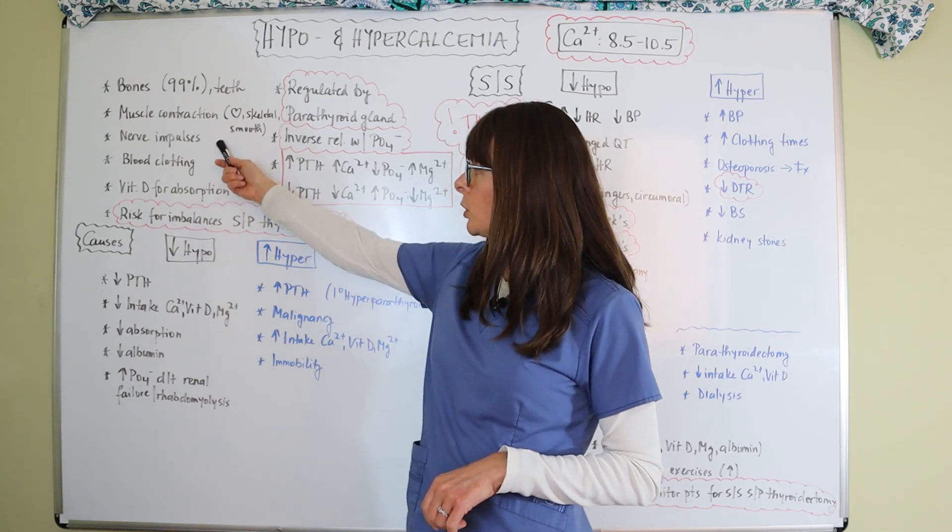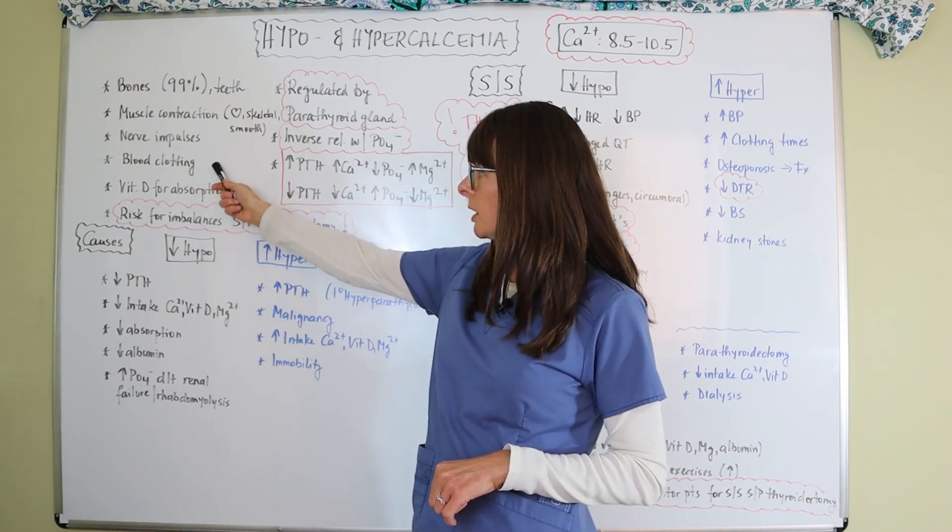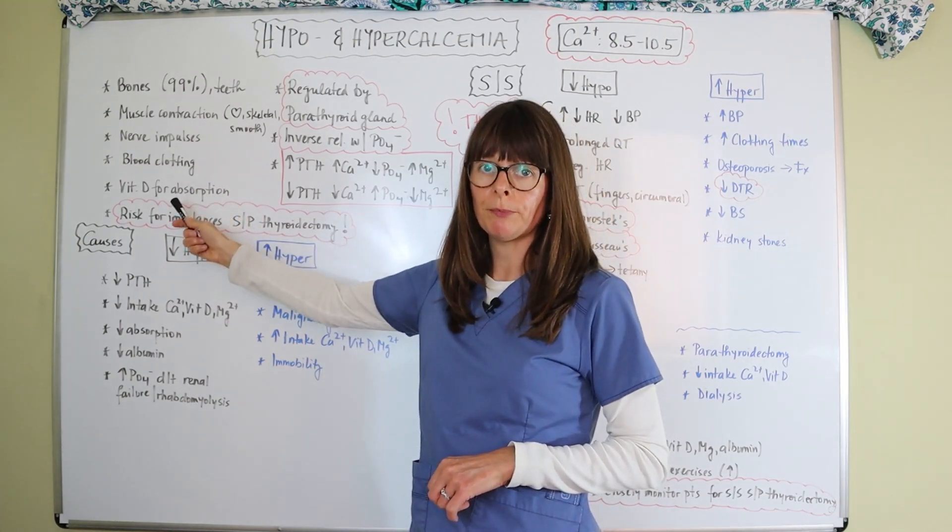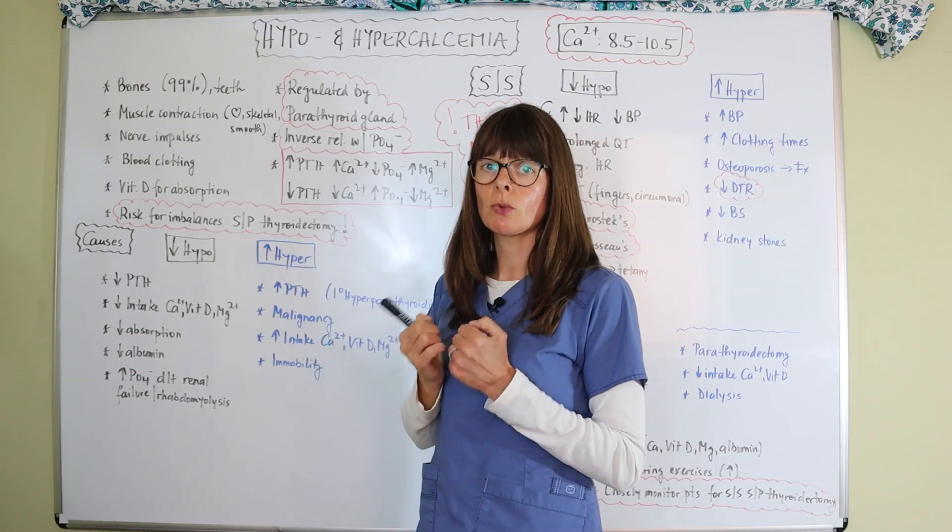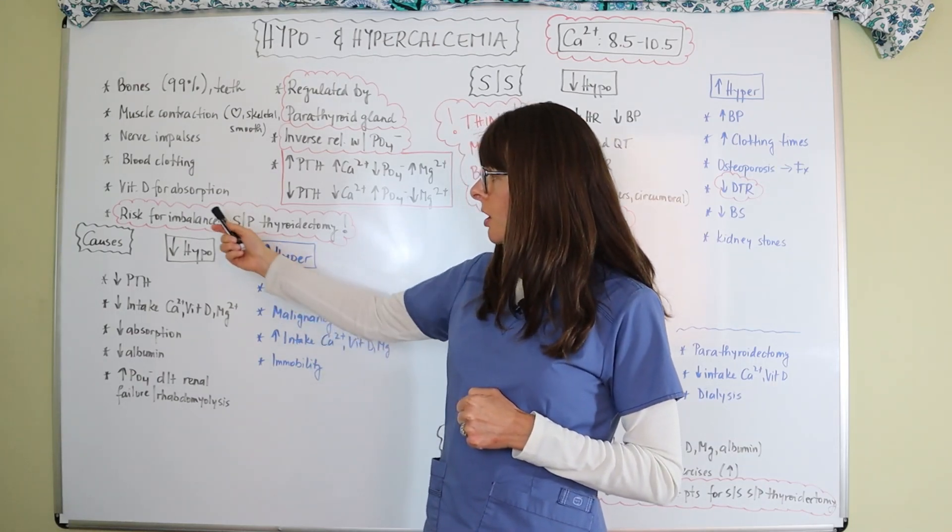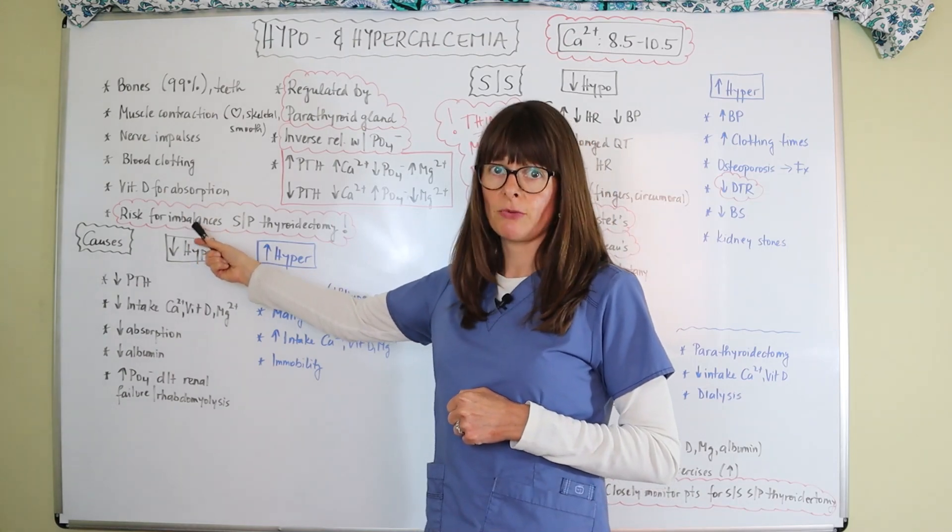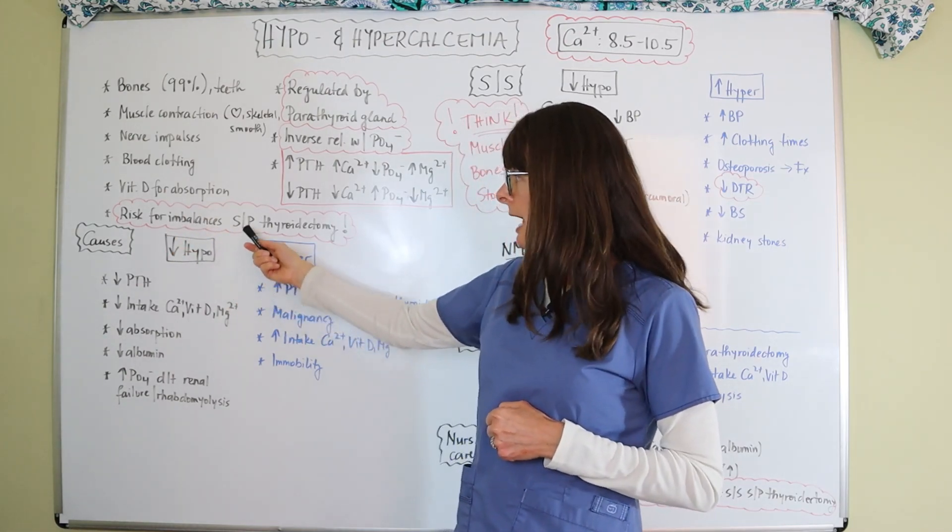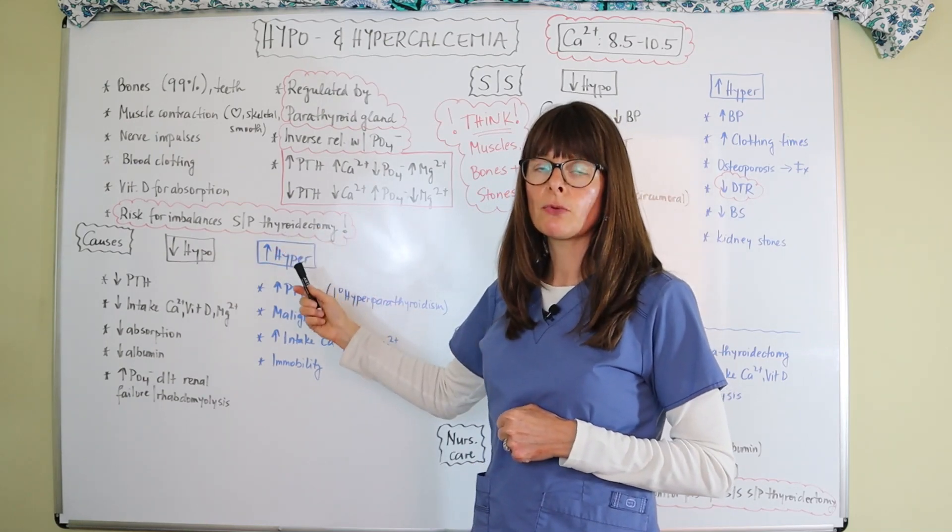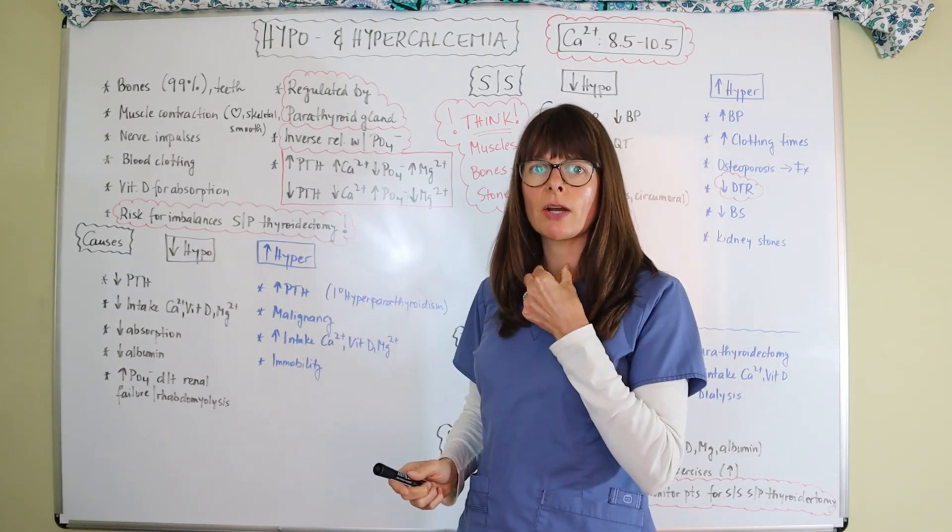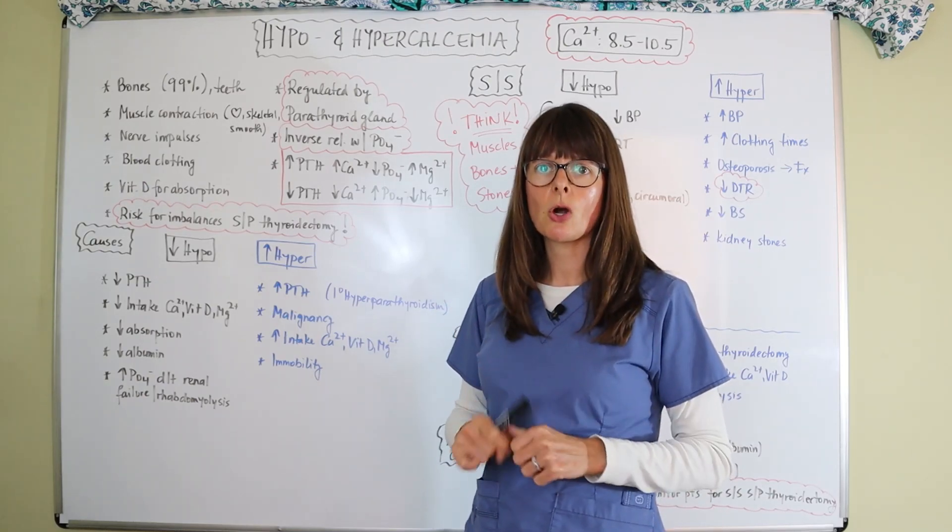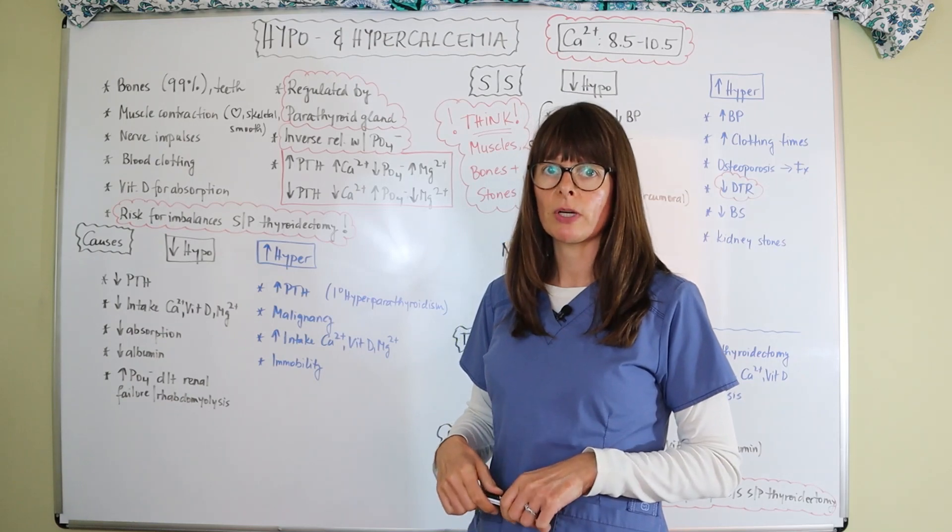Calcium also plays a role in nerve impulses and blood clotting and needs vitamin D for absorption. So vitamin D helps the body to absorb the calcium. And patients are particularly at risk for imbalances of their calcium levels after thyroidectomy. And the reason for that is that behind the thyroid gland in the anterior throat, we have four little glands called the parathyroid glands.